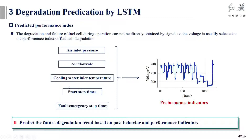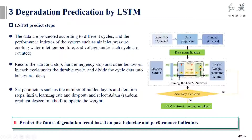We predict the future degradation trend based on past behavior and performance indicators. The fuel cell prediction steps based on long short-term memory are shown in the figure. First, the data are processed according to different cycles and the performance indices such as air inlet pressure, cooling water inlet temperature, and voltage under each cycle are extracted. Second, we record start and stop, fault, emergency stop, and other behaviors in each cycle and the durable cycle count.